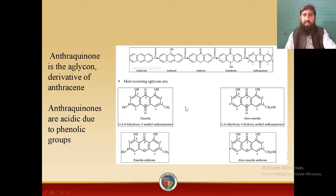The most commonly occurring aglycone in Anthraquinone Glycosides is Emodin, which is 1,6,8-trihydroxy-3-methyl-anthraquinone. The hydroxyl groups are at carbon numbers 1, 6 and 8, and at carbon number 3 a methyl group is attached, making it chemically 1,6,8-trihydroxy-3-methyl-anthraquinone.